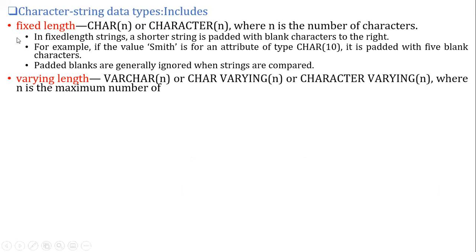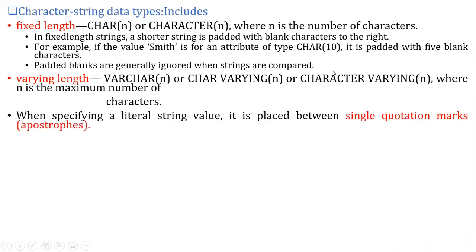For variable-length strings, we use VARCHAR(n), CHAR VARYING(n), or CHARACTER VARYING(n). Here n indicates the maximum number of characters. If I specify VARCHAR(10) and enter 'Smith', the remaining five characters will not be padded with any blank characters, because the size is varying — only the actual characters entered will occupy space. If you don't know the exact size of the value you're going to enter, it's better to use a variable-length character string.